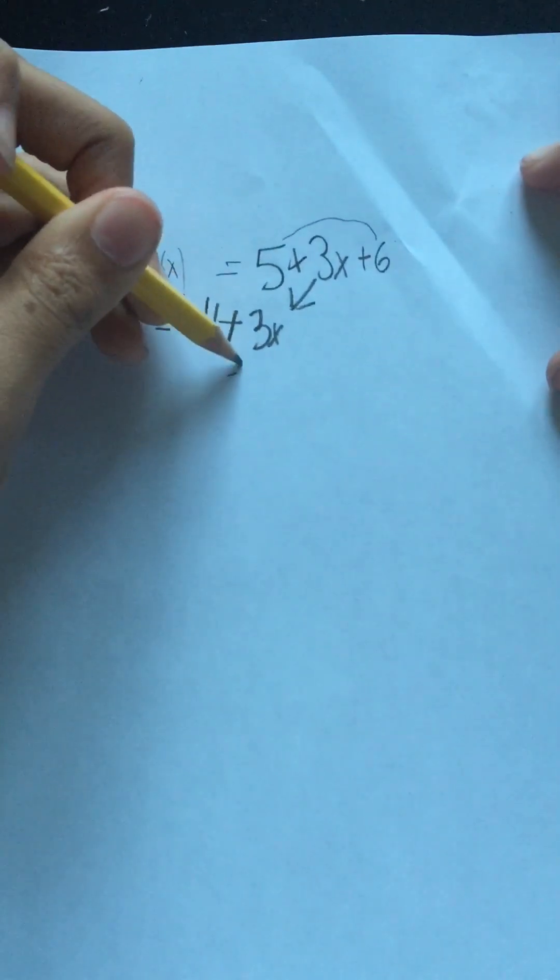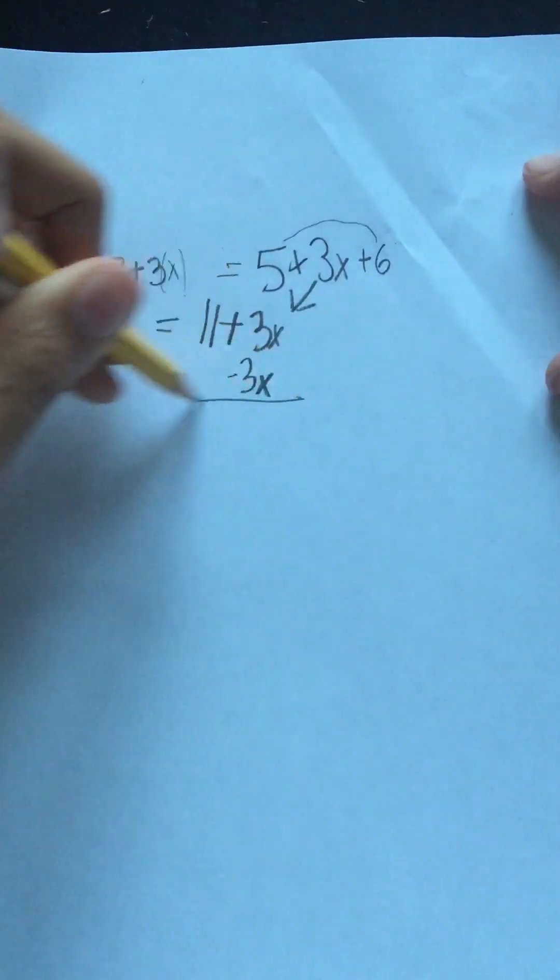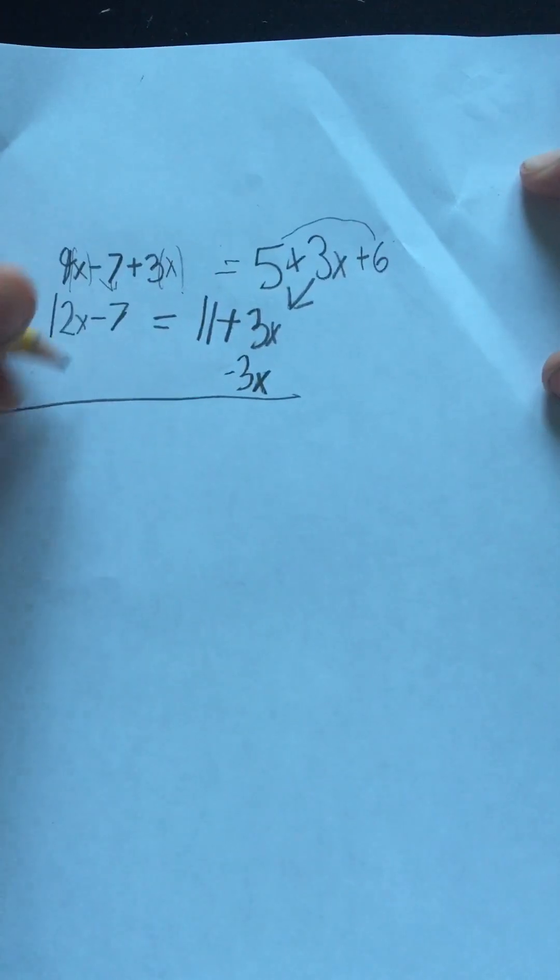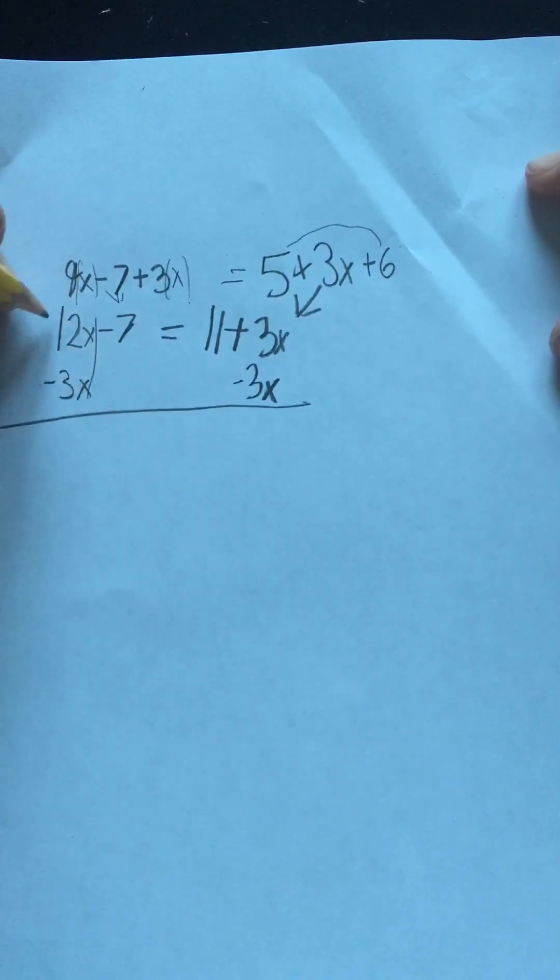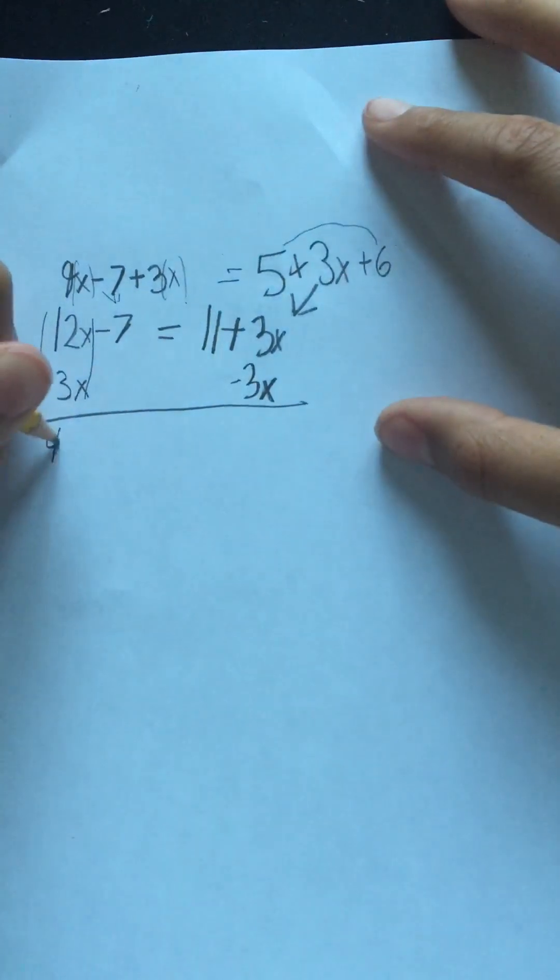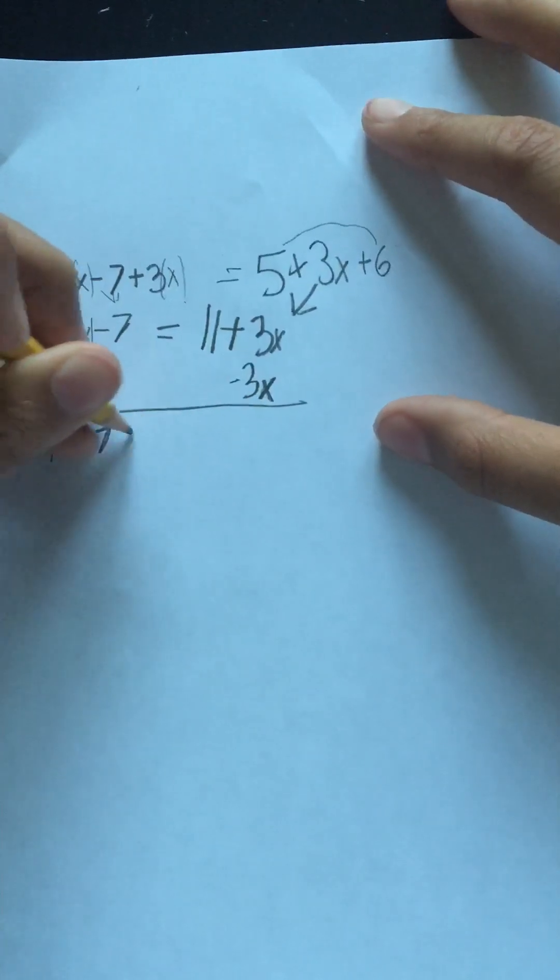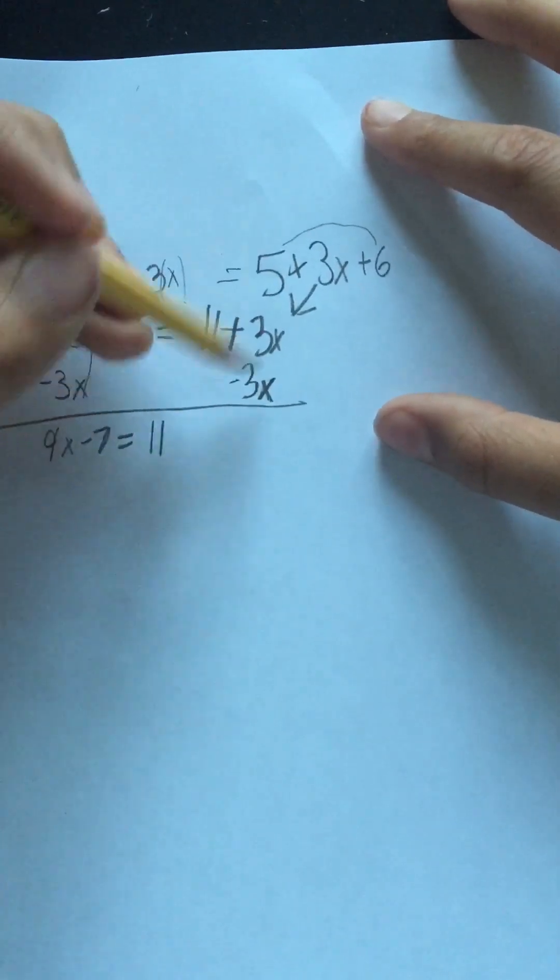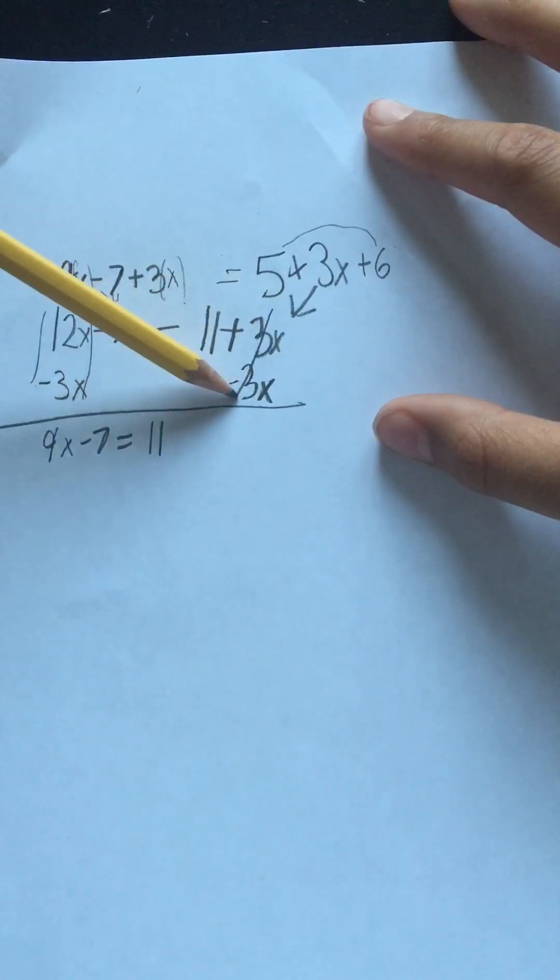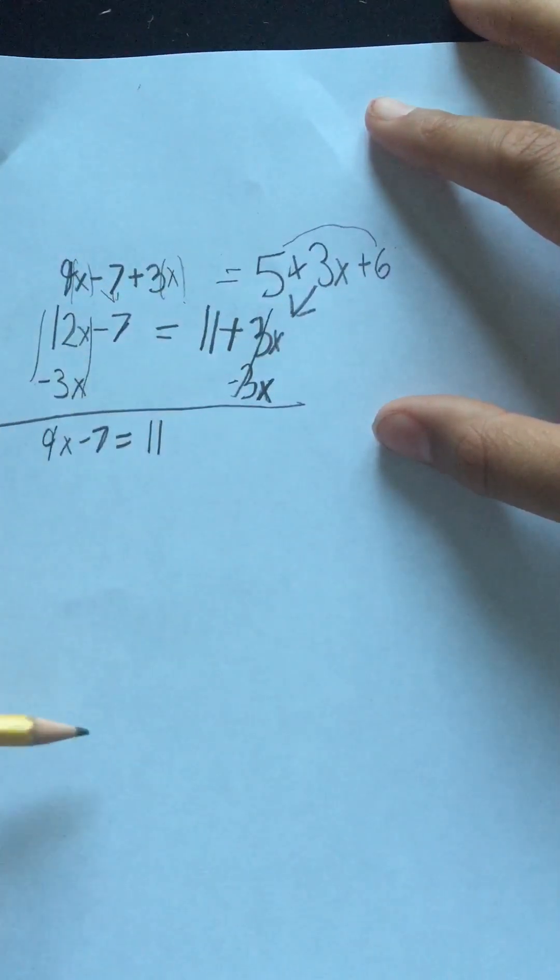Let's take 3x here, we can subtract it from both sides. Subtracting 3x here, we have 12 minus 3x. Since they're like terms, we subtract them, and we have 9x minus 7 is equal to 11. And since we got rid of the 3x, we can cancel it out.